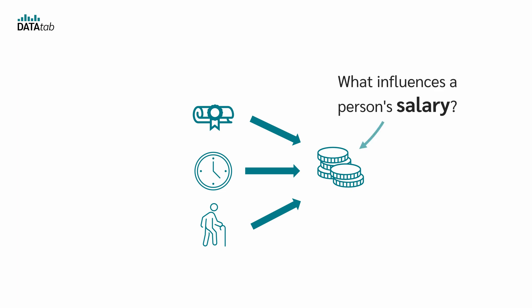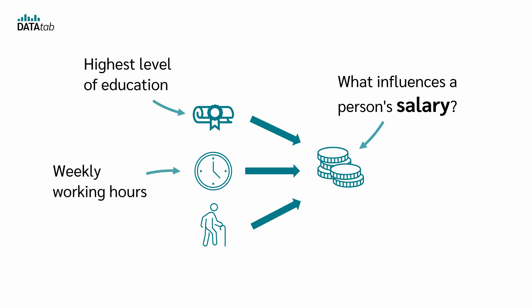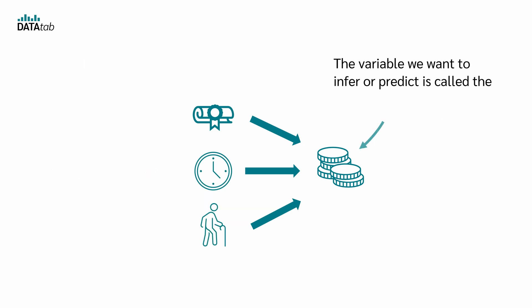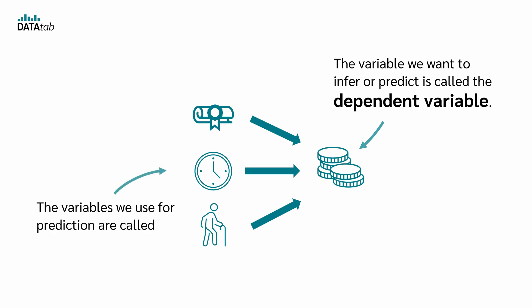Let's say you want to find out what influences a person's salary. For example, you could take the highest level of education, the weekly working hours, and the age of a person. You could investigate whether these three variables have an influence on the salary of a person. If they do, you can predict a person's salary by taking the highest level of education, the weekly working hours, and a person's age. The variable we want to infer or predict is called the dependent variable. The variables used for prediction are called independent variables.